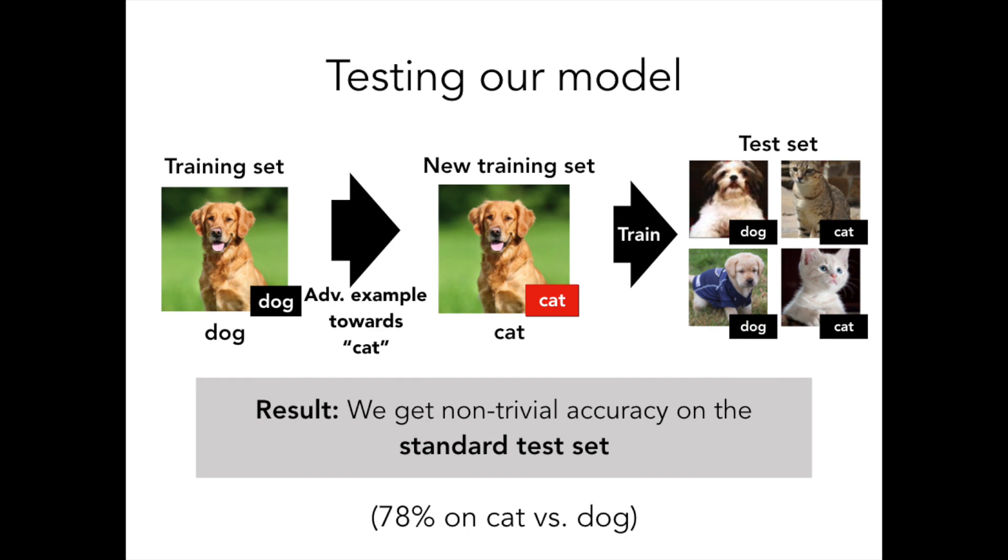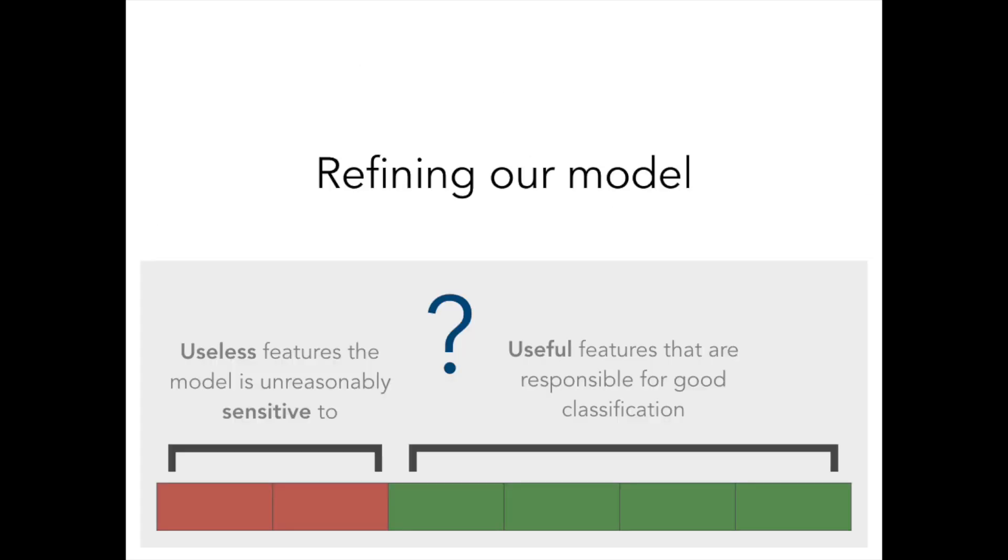Surprisingly, we get non-trivial accuracy on the unmodified test set. This result indicates a flaw in our conceptual model of adversarial examples.